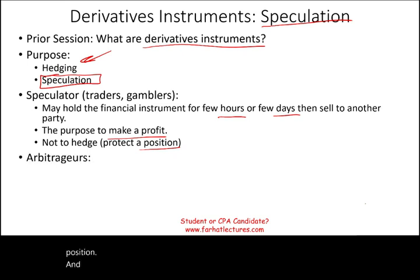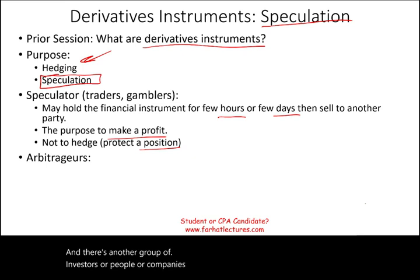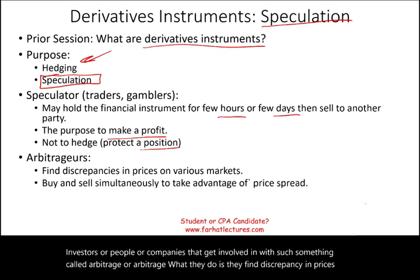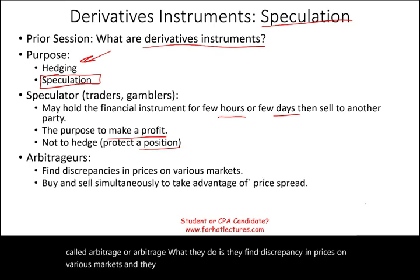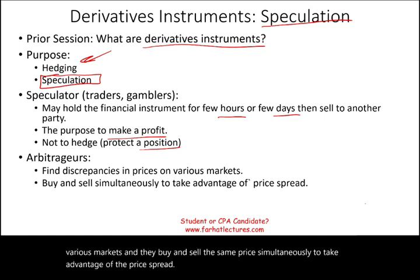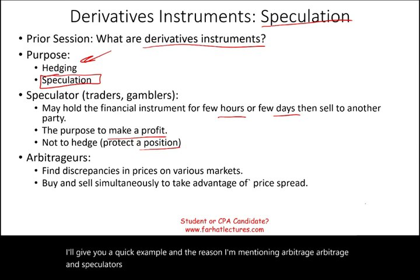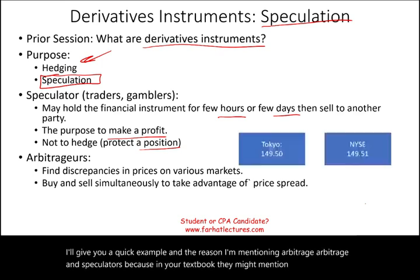There's another group called arbitrageurs. What they do is find discrepancies in prices on various markets and buy and sell the same asset simultaneously to take advantage of the price spread. I'll give you a quick example. The reason I'm mentioning arbitrageurs and speculators is because your textbook might mention them, and I don't want you to be confused.